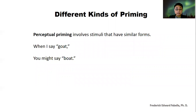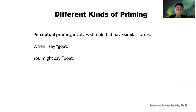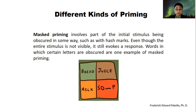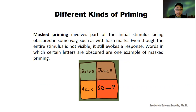Perceptual priming involves stimuli that have similar forms. For example, when I say goat, you might say boat — because except for the first letter, all the letters are the same. Masked priming involves part of the initial stimulus being obscured in some way, such as with hash marks, even though the entire stimulus is not visible. It still evokes a response. Words in which certain letters are obscured are one example of masked priming — as with the earlier soup and soap example, depending on the priming that you received.